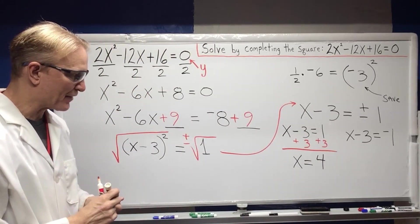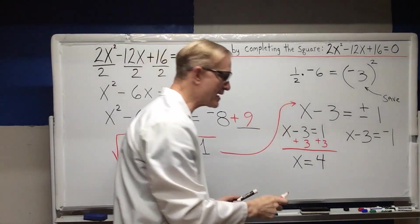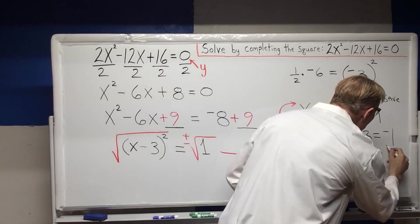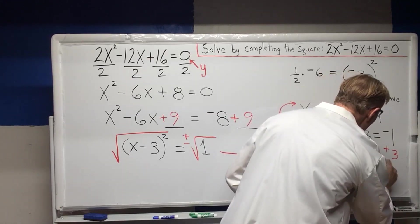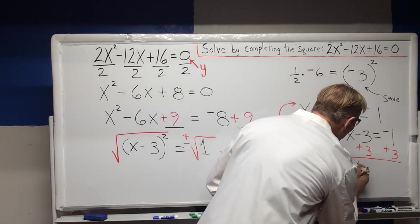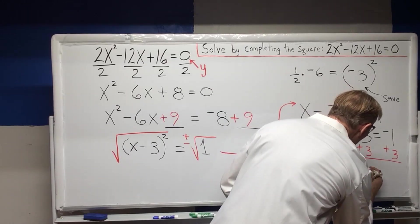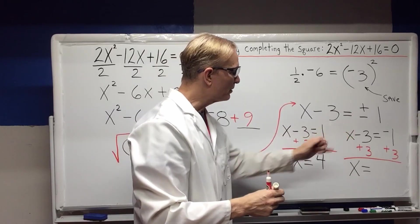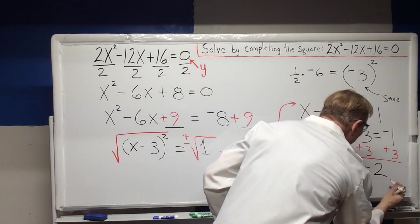Now if I do the same thing, add 3, add 3 on this side, X equals negative 1 plus 3 is 2.